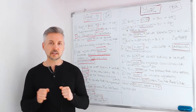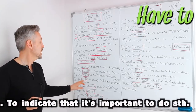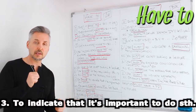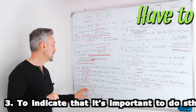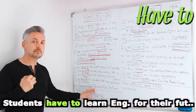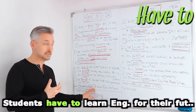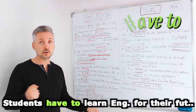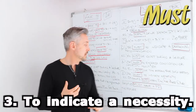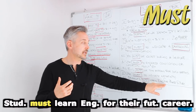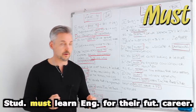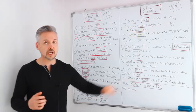The third usage: use 'have to' to indicate that it's important to do something. For example, 'students have to learn English for their future career' means it's important for students to learn English. Instead, if you use 'must,' it indicates necessity: 'students must learn English for their future career' means it's necessary for students to learn English. So you can see that it changes meaning.